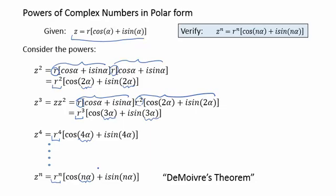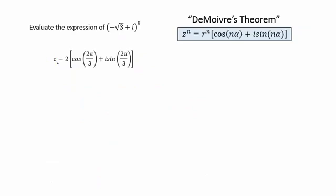Let's look at an example. Suppose we wanted to evaluate the expression, negative root 3 plus i to the eighth power. Traditionally, to multiply this expression, we would have to FOIL, or multiply negative root 3 plus i, times itself, eight times. Thankfully, with De Moivre's theorem, we'll be able to do this with ease.